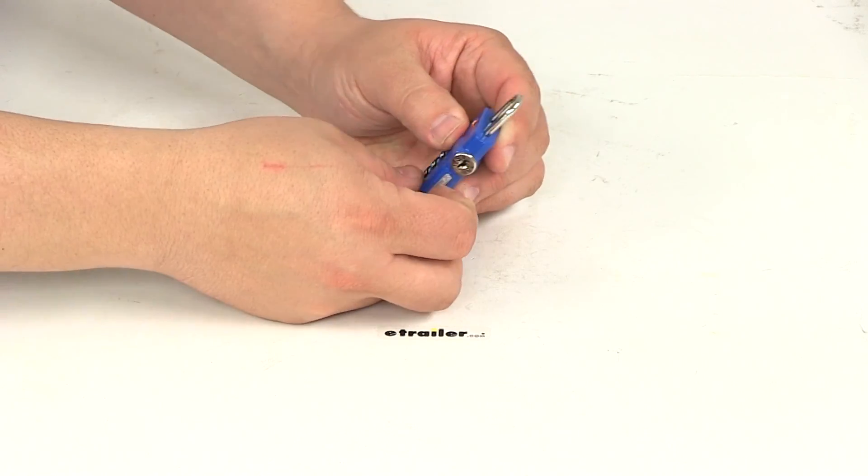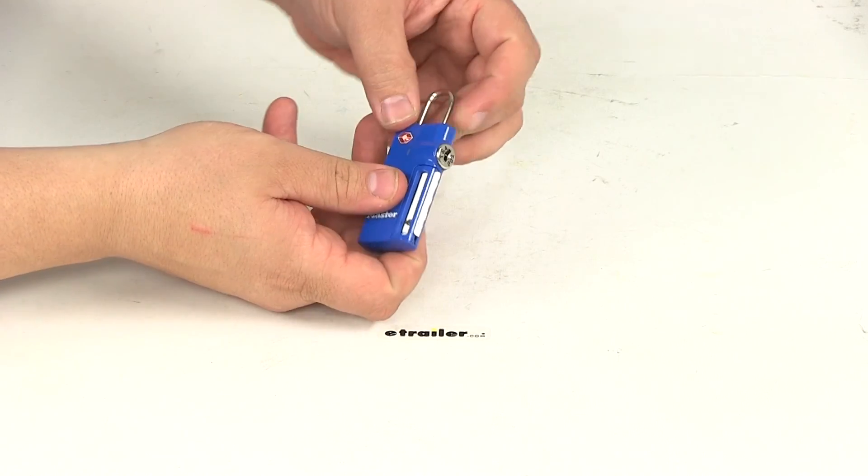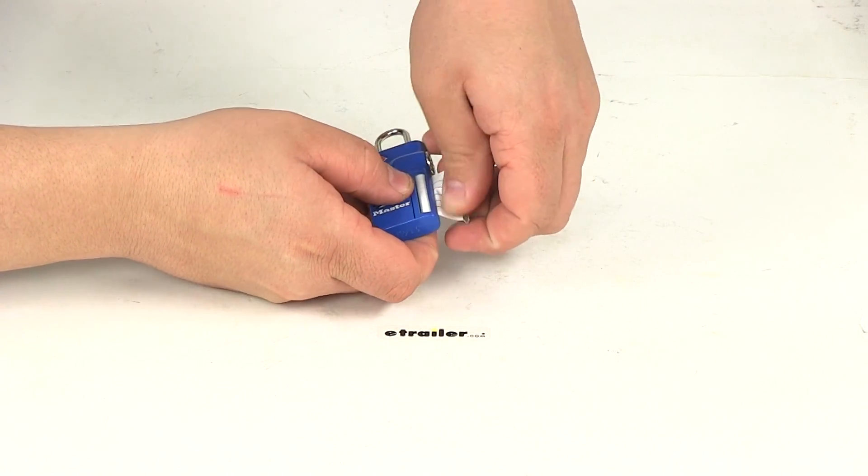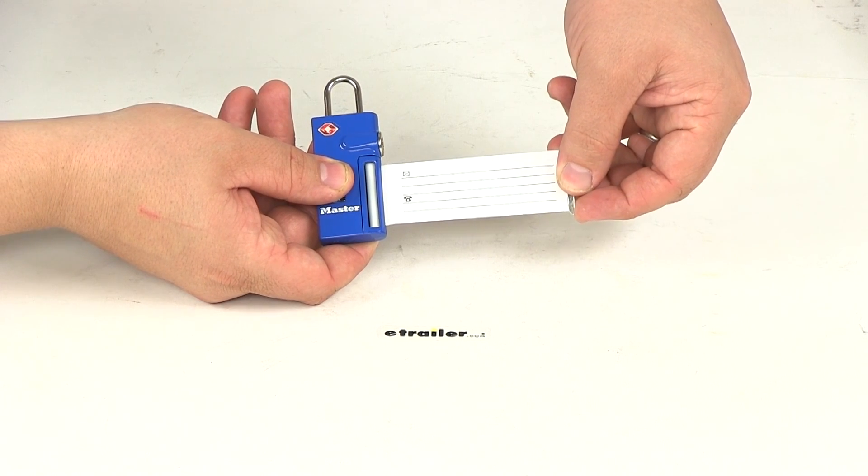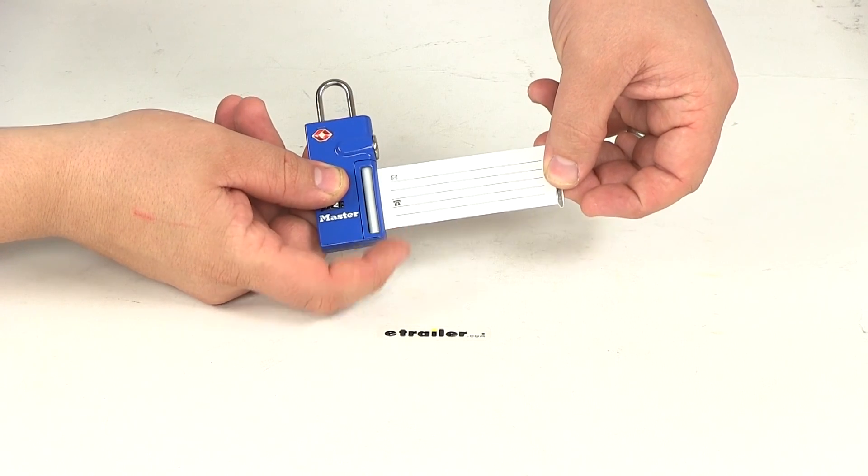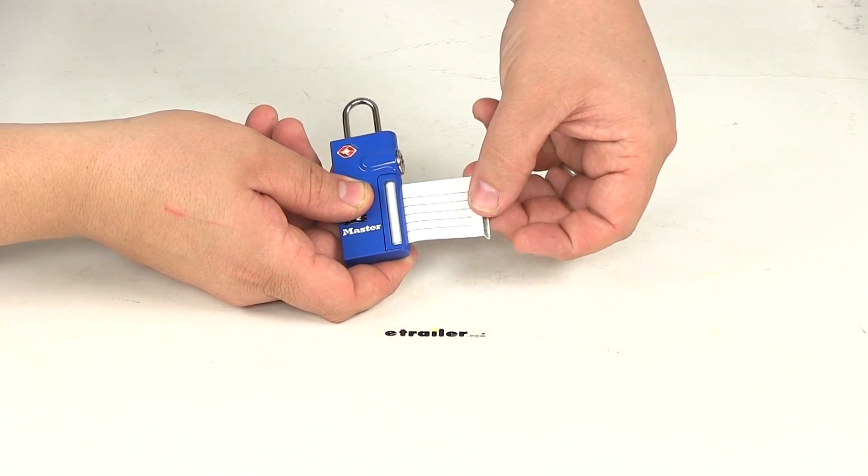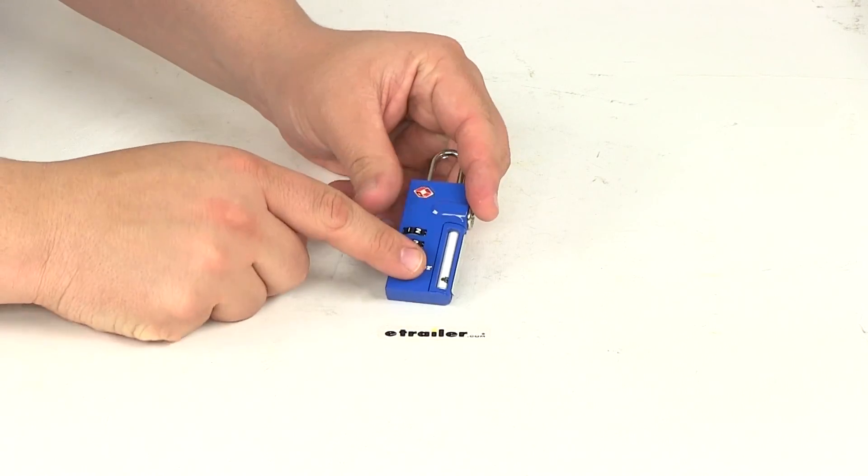Another neat feature I want to point out is this piece right here is a retractable personal ID panel. So you can write your information on there, and that way if your luggage is ever lost or damaged, they can get your contact info and notify you. And that stays inside, so that's just a nice little feature to have.